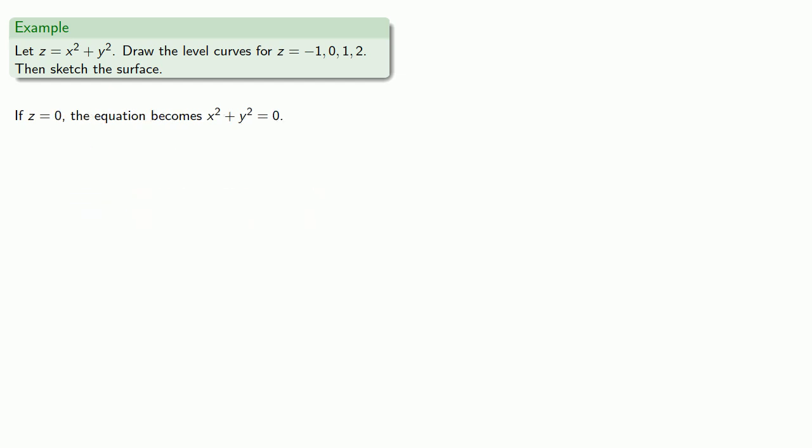If z equals 0, the equation becomes x squared plus y squared equals 0. And we try and find a point that satisfies this equation. And the only point that does is the point 0, 0. And so this level curve is just the point 0, 0.